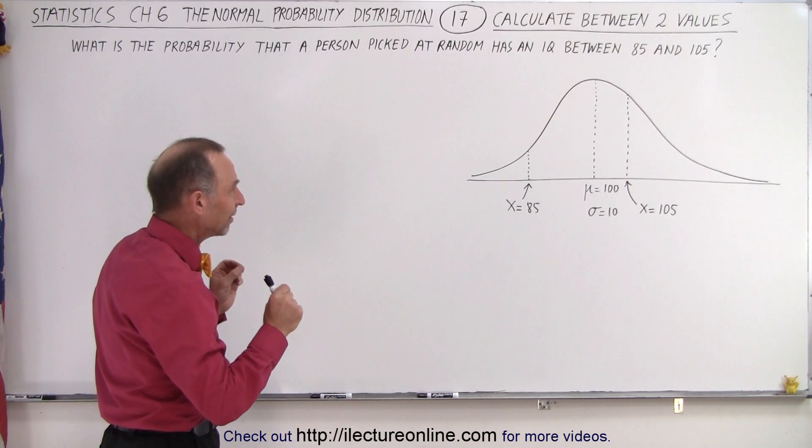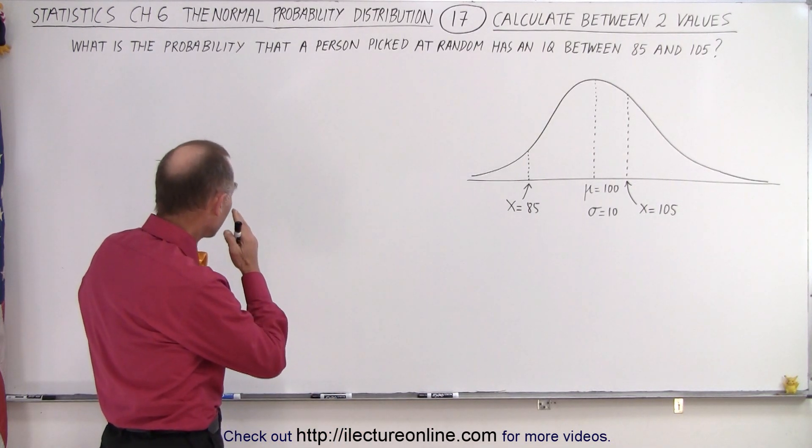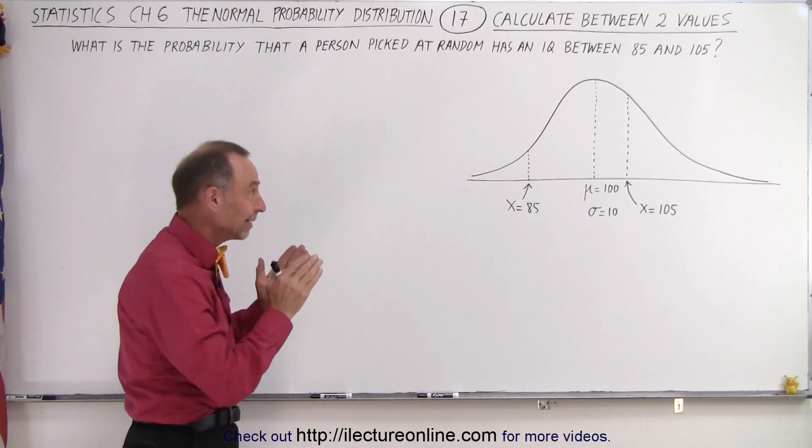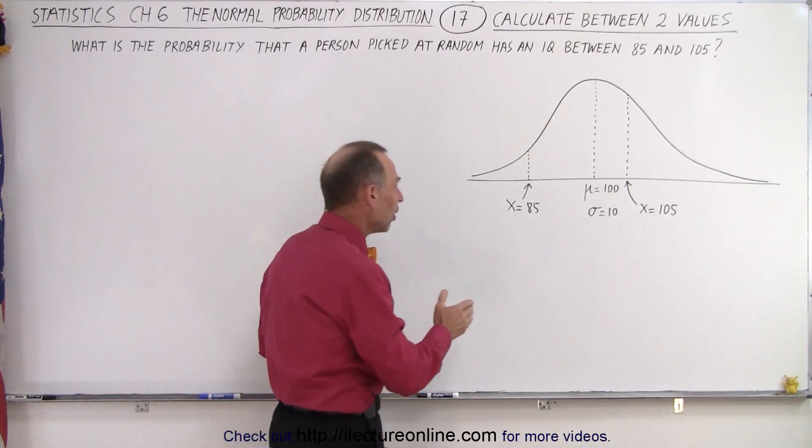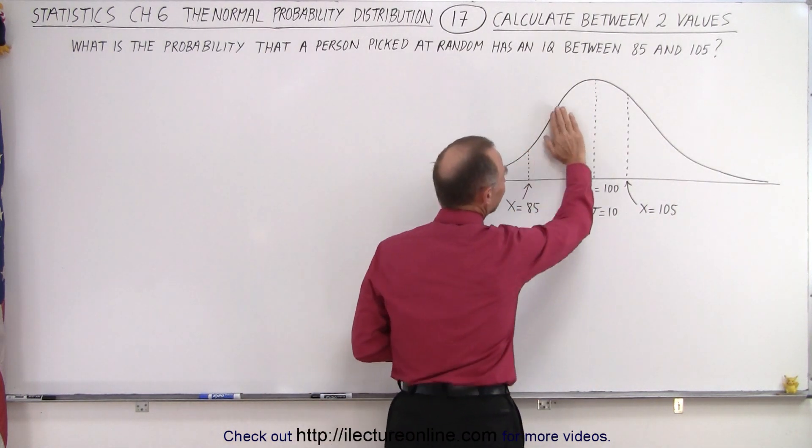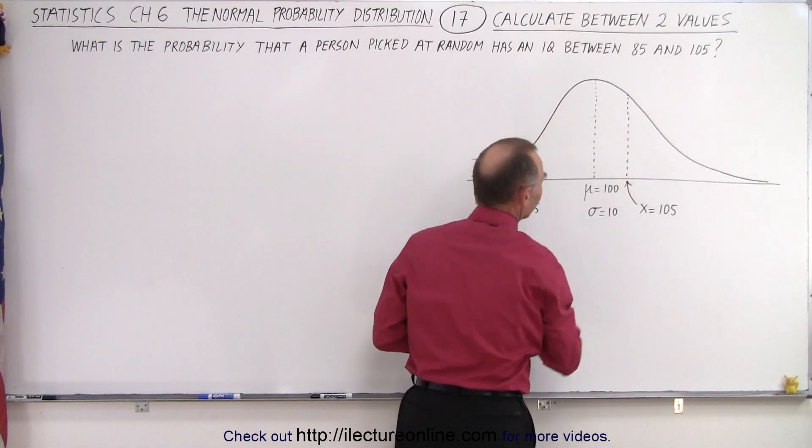But what we're trying to do is say this: let's pick a person at random and try to calculate the probability that the IQ of that person will fall between 85 and 105. Essentially, we're trying to find the area under the curve from here to here.